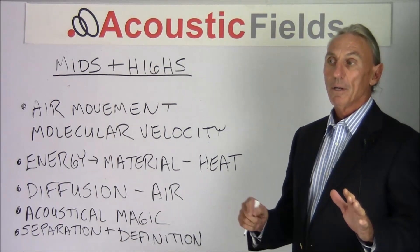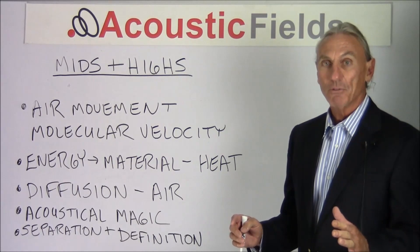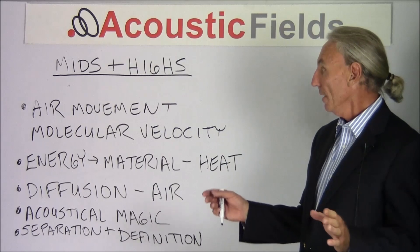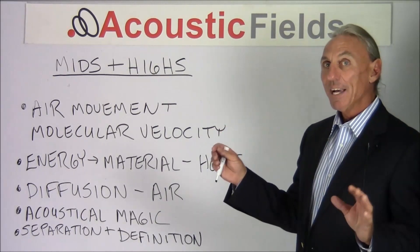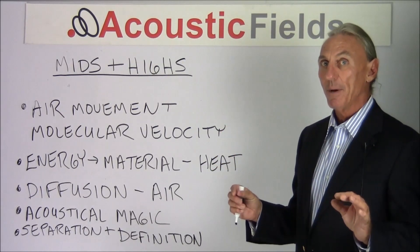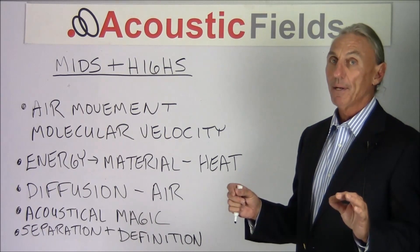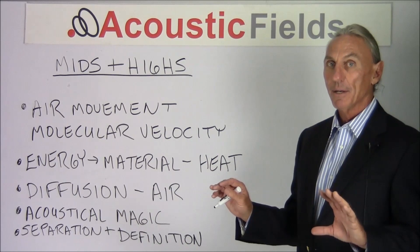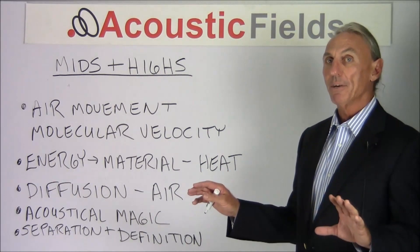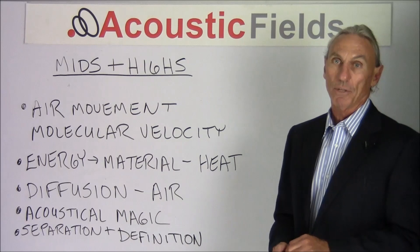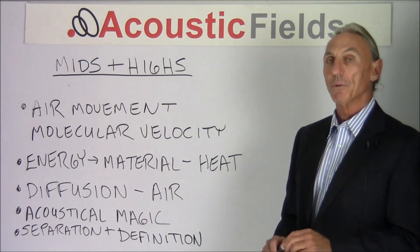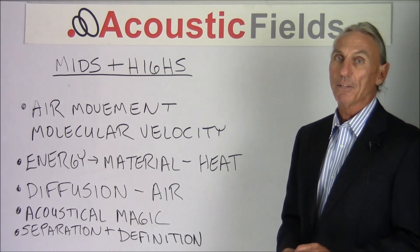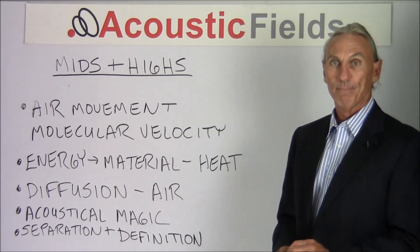So the goal is a kind of balancing triad: get the low frequency energy under control through absorption, get the mids and highs defined through the correct amount of absorption at the right rate and level, and then take whatever is left and spread that energy out using diffusion. That will give you the most balance and the most equal representation of everything that you need in your room. Thank you.